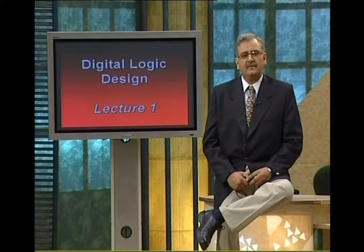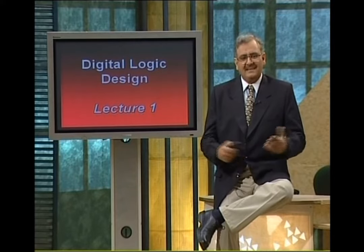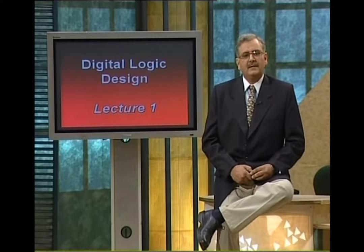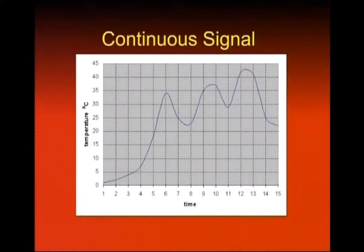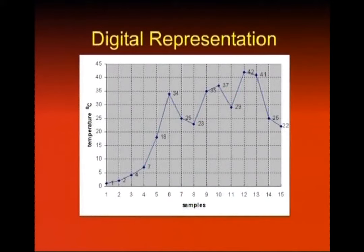Digital values, on the other hand, are a discrete set of values representing the continuous signal. A continuous signal can be represented digitally by taking samples at regular but fixed intervals. In the next diagram, we take 15 samples at regular time intervals. The 15 samples having the values 1, 2, 4, 7, all the way up to 22, represent the continuous signal digitally.